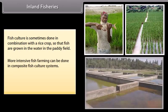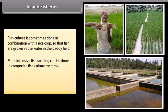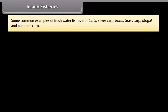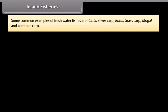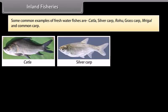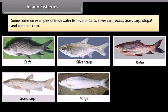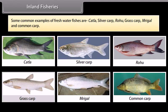More intensive fish farming can be done in composite fish culture systems. Both local and imported fish species are used in such systems. Some common examples of freshwater fish are katla, silver carp, rohu, grass carp, mrigal and common carp.